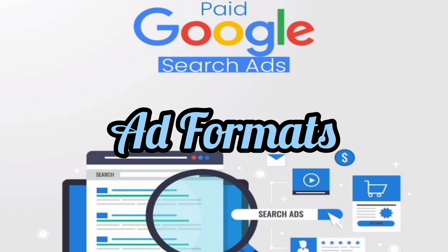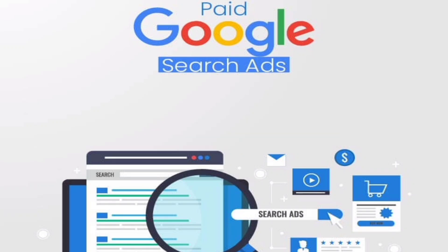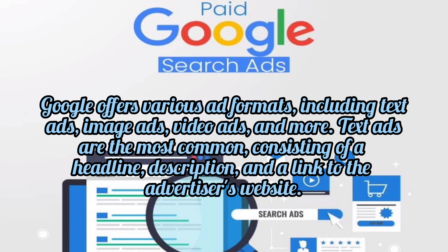Ad Formats: Google offers various ad formats including text ads, image ads, video ads, and more. Text ads are the most common, consisting of a headline, description, and a link to the advertiser's website.